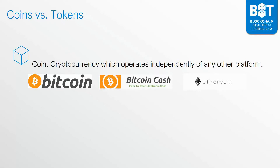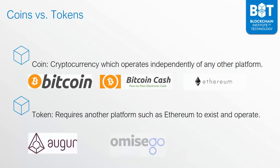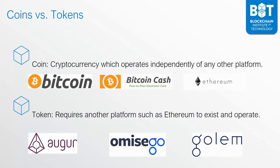So for the purposes of this video, you can see that Bitcoin, Bitcoin Cash, and Ethereum are coins when it comes to cryptocurrencies. A token requires another platform, such as Ethereum, to exist and operate. Examples of tokens are Augur, Omisego, and Golem. These are tokens that are built on top of Ethereum.